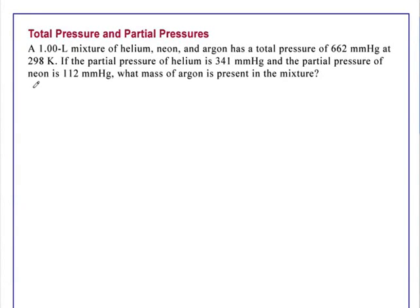Total pressure and partial pressures. A 1.00 liter mixture of helium, neon, and argon has a total pressure of 662 mmHg at 298 K. If the partial pressure of helium is 341 mmHg and the partial pressure of neon is 112 mmHg, what mass of argon is present in the mixture?